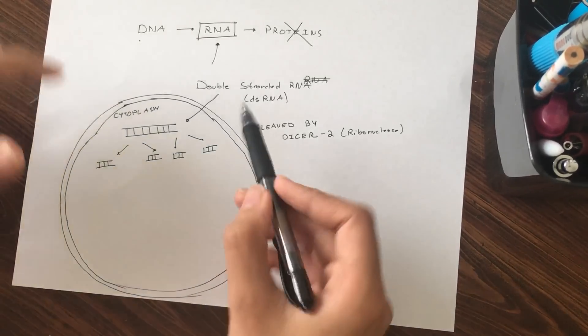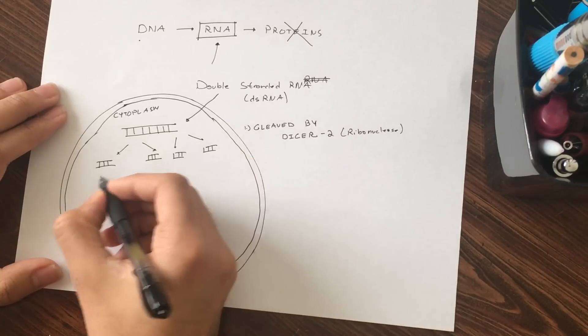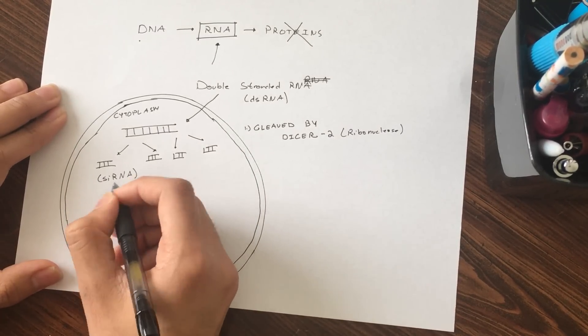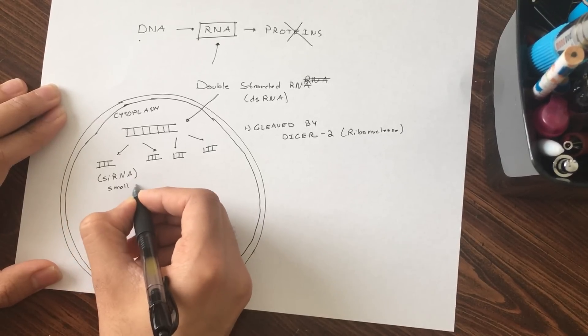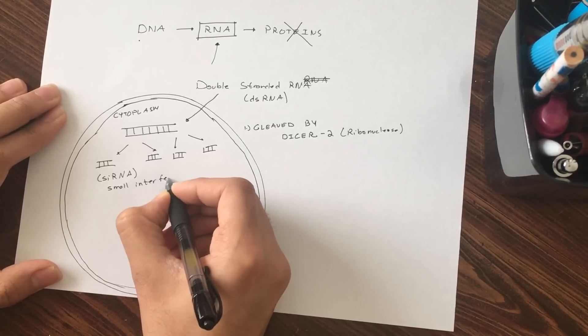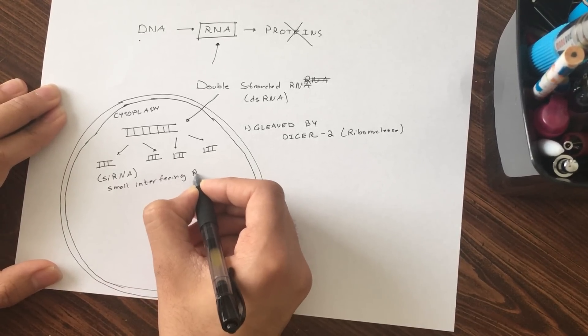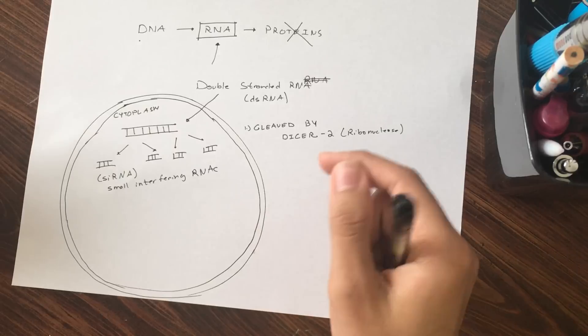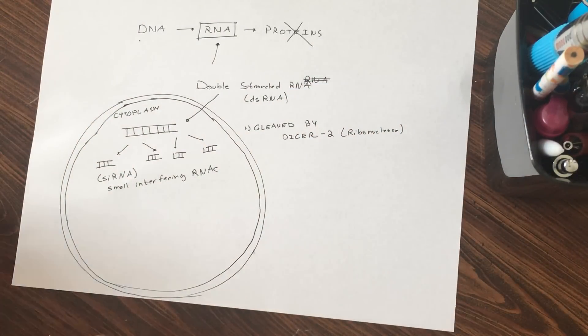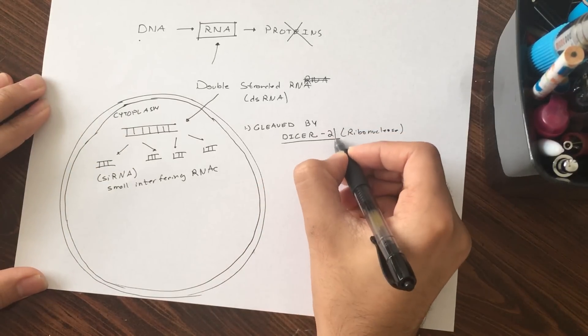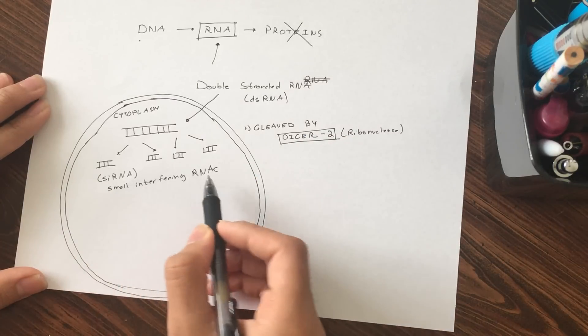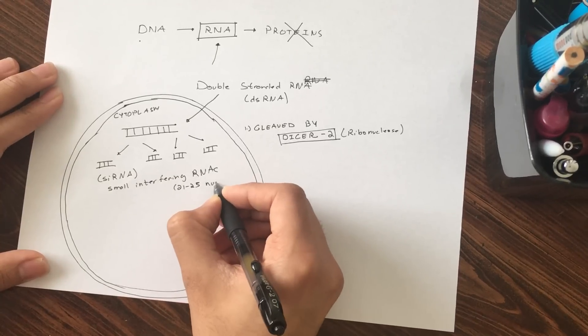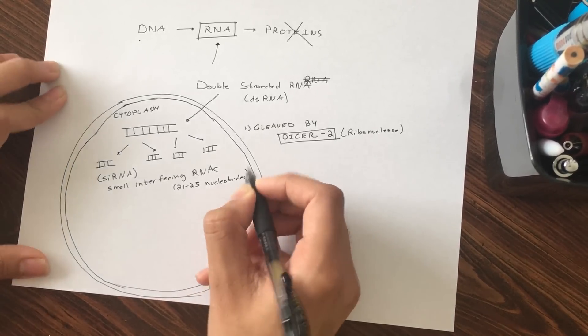After it's cleaved, it's not known as double-stranded RNA. These small segments are siRNA or small interfering RNAs. So just to review: you have double-stranded RNA that comes into the cell, gets cleaved by DICER2 which is a ribonuclease, and you have many small interfering RNA molecules. These are usually around 21 to 25 nucleotides long, so these are really tiny particles.